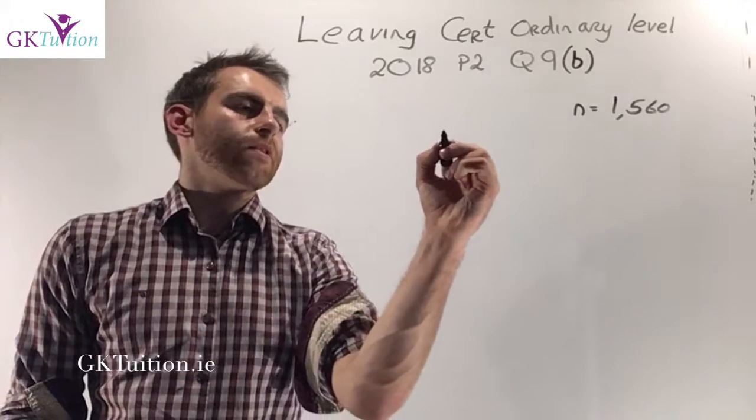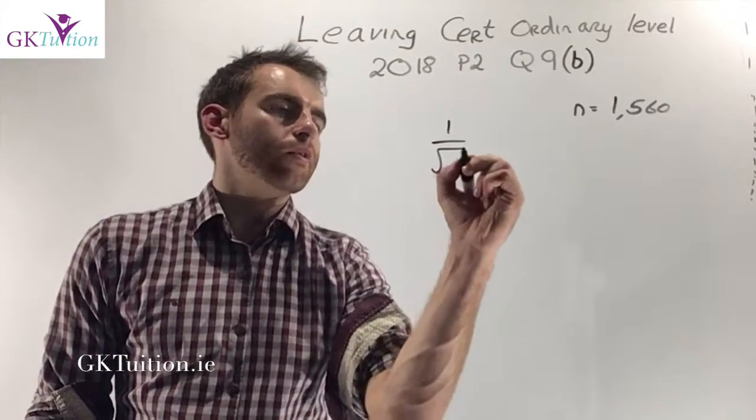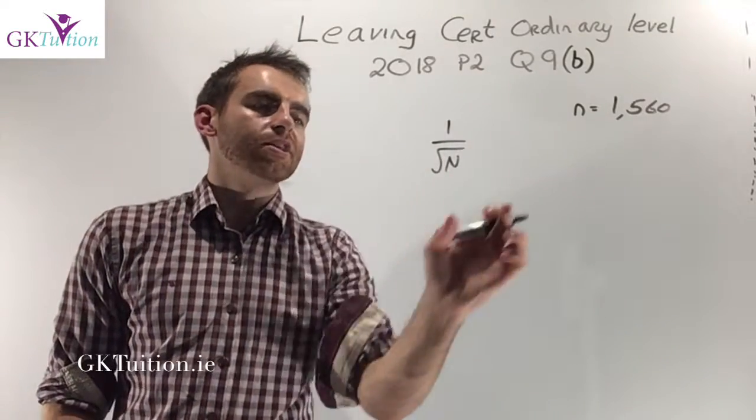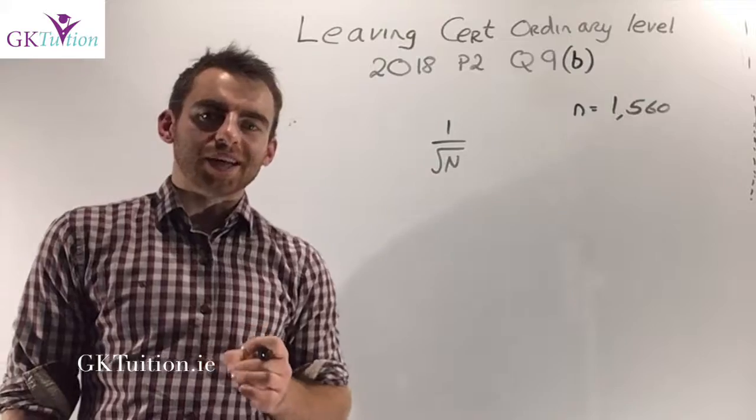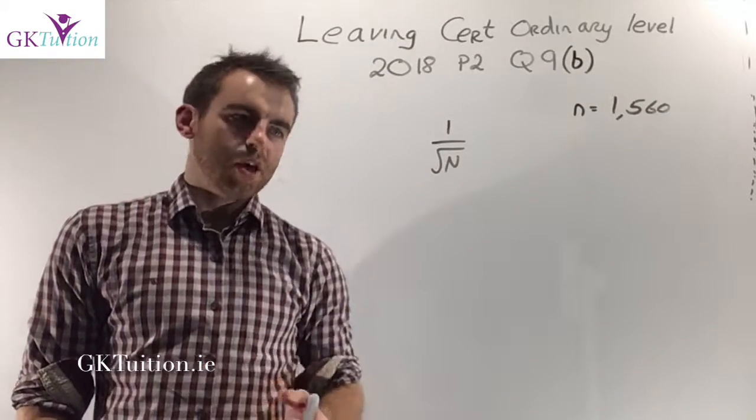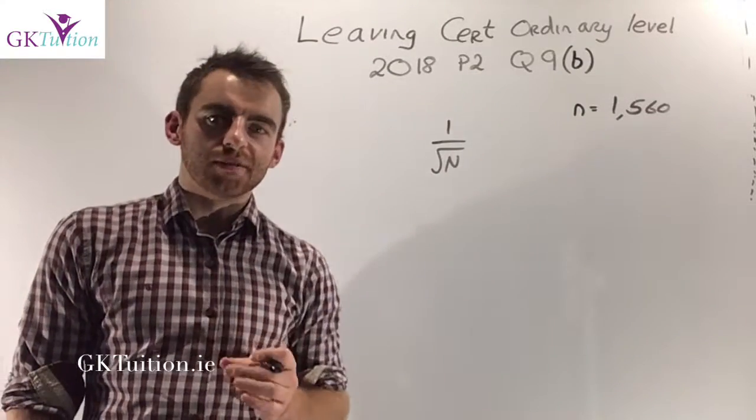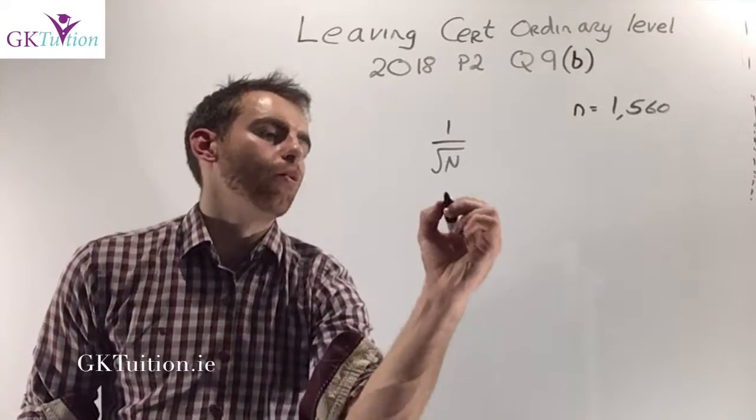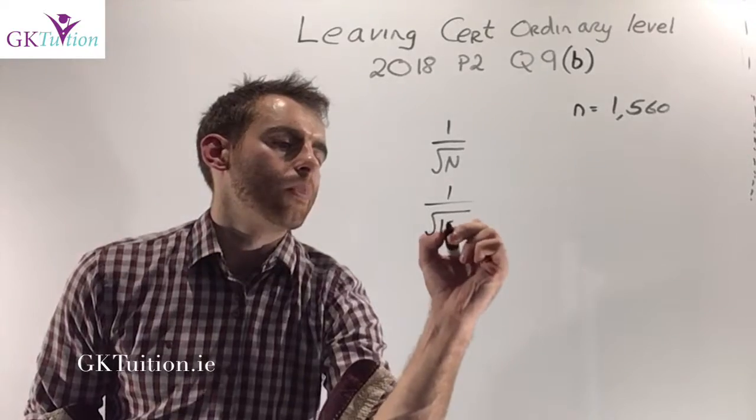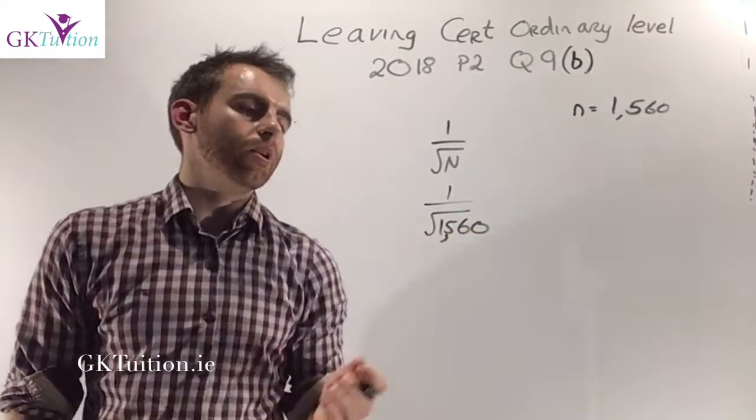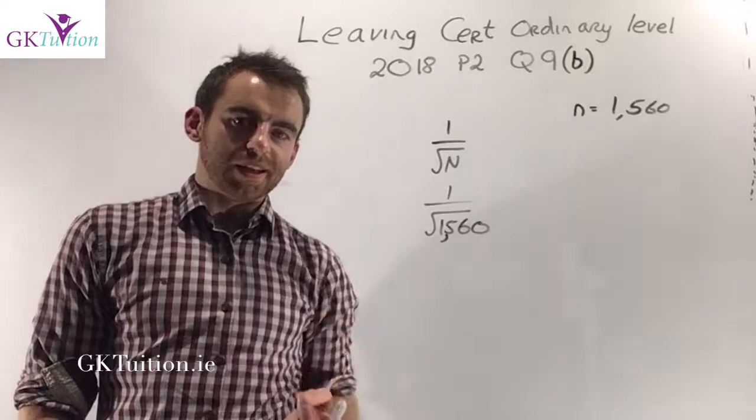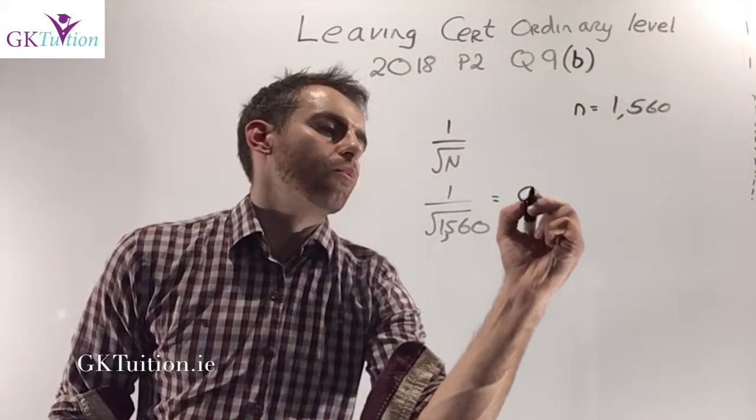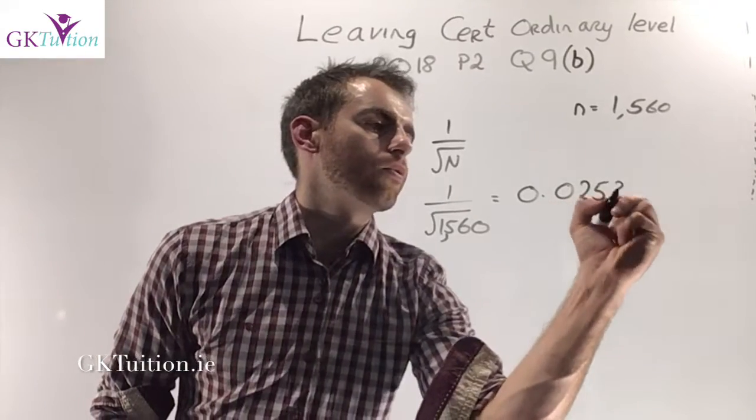You should remember that the formula for the margin of error is 1 over the square root of n. This allows us to calculate the margin of error for any survey where n represents the size of your sample. Once you remember your formula, this is a very basic question. All we need to do is substitute in 1,560. If you plug that into your calculator it works out as 0.0253.